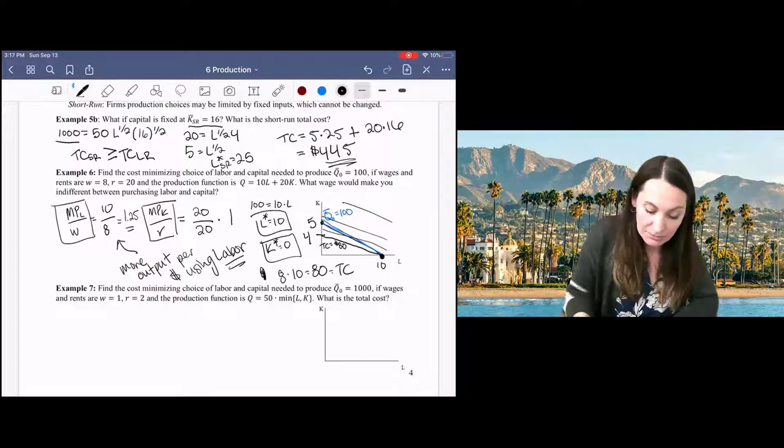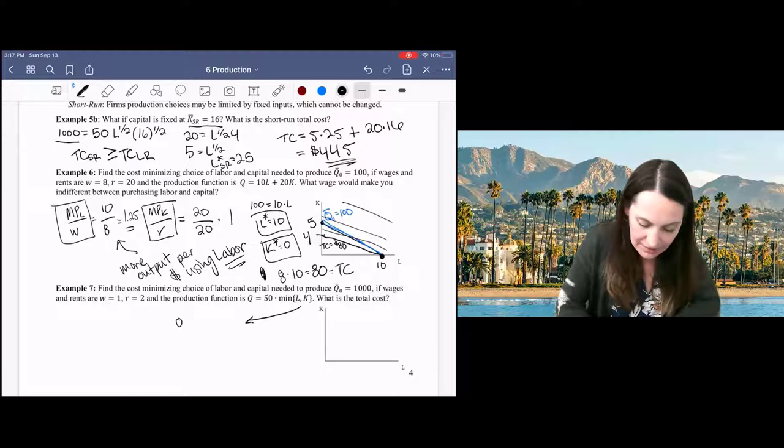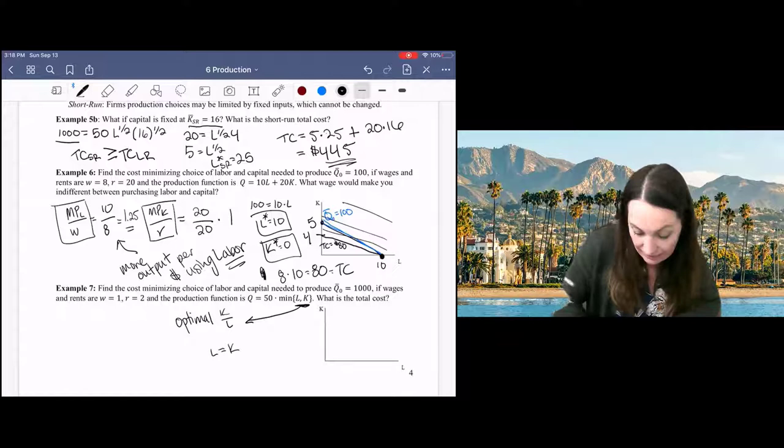And you'll recall from consumption that to find the optimal capital labor ratio, what we need to do is set equal the terms within our minimum function. So here, if I set them equal, I get L equals K, which is the same as saying that K over L is equal to 1.